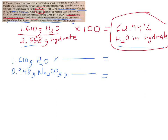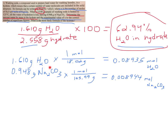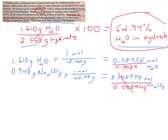Convert from grams to moles for each. 1.610 grams of water divided by 18.02 grams per mole gives you the moles of water. For Na₂CO₃ — sodium carbonate — take 0.948 grams divided by 105.99 grams per mole (you may have rounded to 106), and you get the moles of Na₂CO₃. Now, as from the previous lesson, once you get the number of moles, you divide by the smallest number of moles.